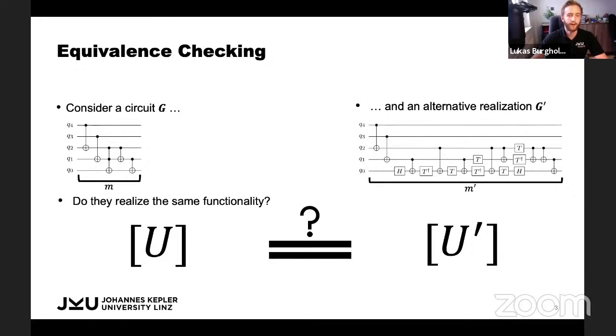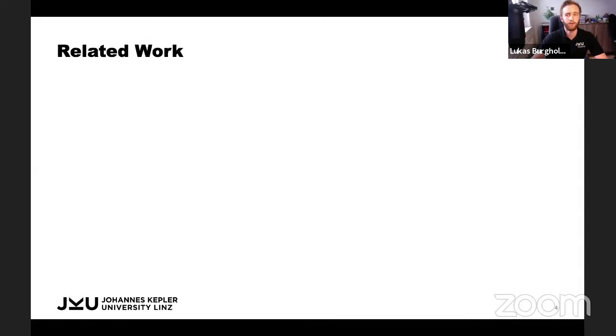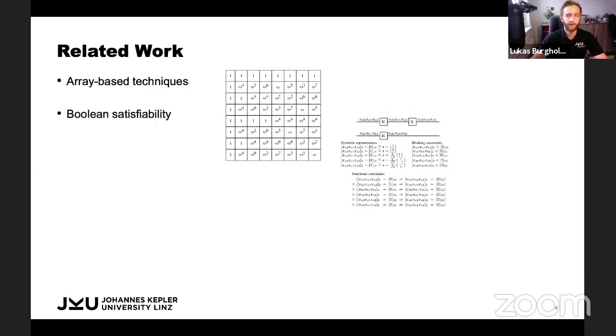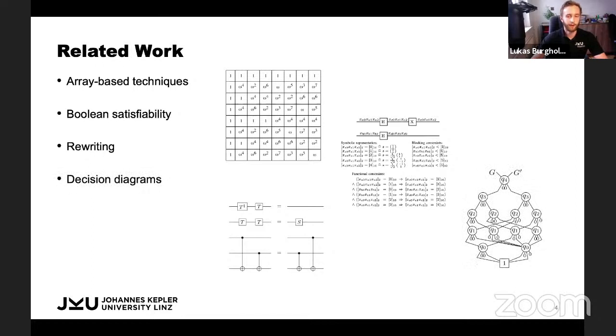While conceptually simple, this quickly amounts to a pretty complex task because these matrices are actually exponential in size with respect to the number of qubits. So a lot of work has been going towards how to efficiently solve this task. There are straightforward techniques based on arrays, techniques based on tensor networks, and decision diagrams. But all of these techniques suffer from the immense complexity of the underlying task, which has shown to be QMA complete in general. So we have to do better than that.